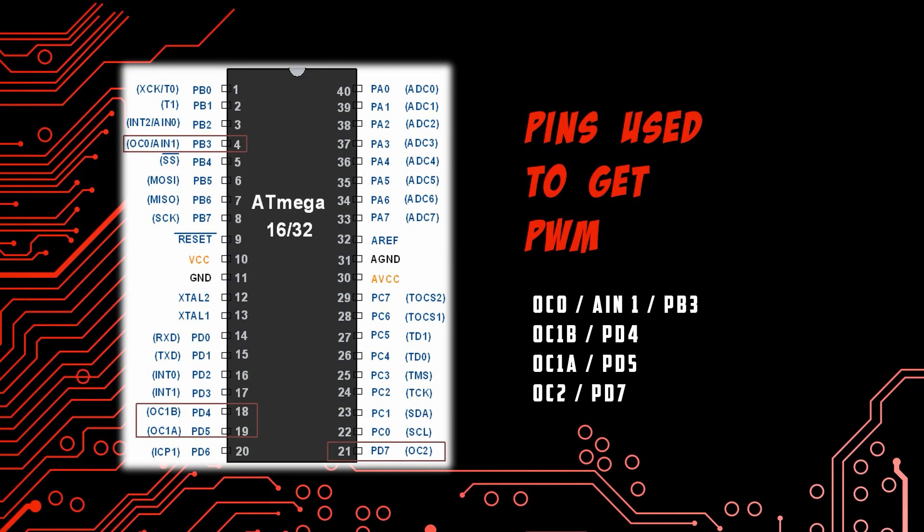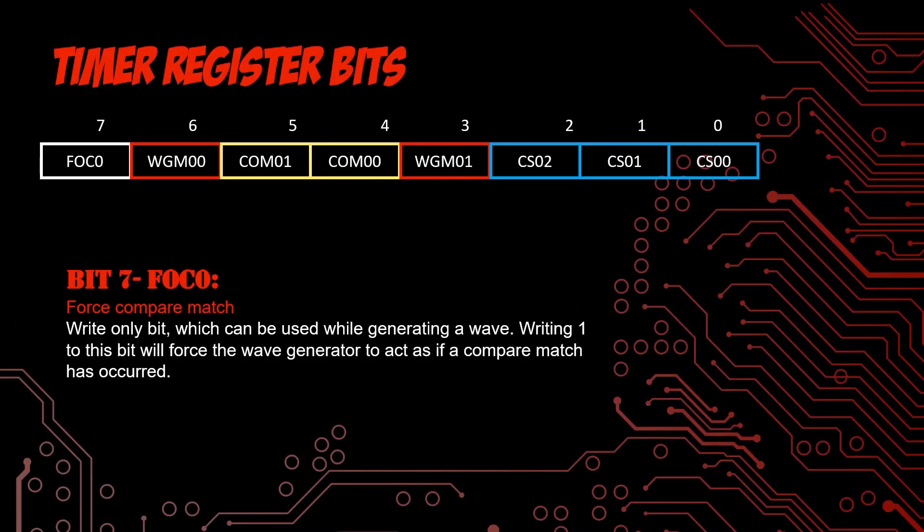When we look onto the Atmega32 chip, there are specific pins from which we can get PWM outputs. Those pins are OC0 pin which is PB3, OC1A and 1B which are PD5 and PD4 respectively, and OC2 which is PD7. If you want to get any other PWM outputs, you have to use these pins of the Atmega32 chip.